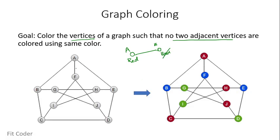We have this graph which has 10 vertices. If we color this graph, one of the colorings we can get is on the right side. So if we pick any edge of this graph, let's say AB, we can see that A and B are colored using different colors.